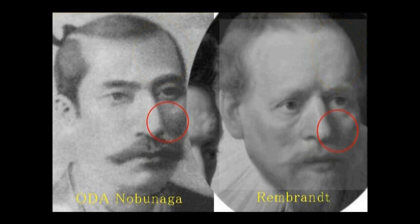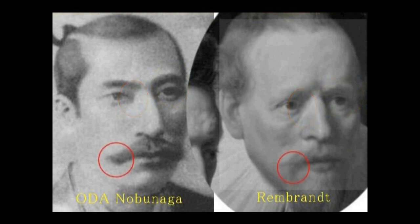During his stay in Japan, it is said one of his missionaries painted a portrait of Oda Nobunaga. The original painting was lost in a fire, but you see a photograph of it taken in the Meiji period of Japan.